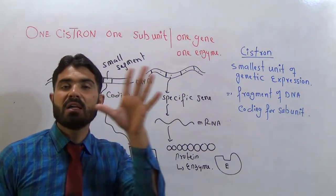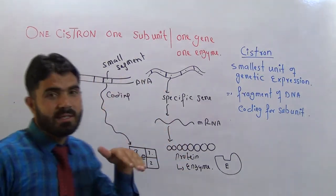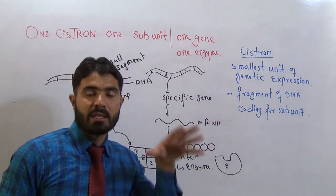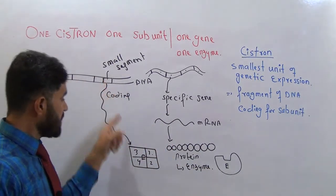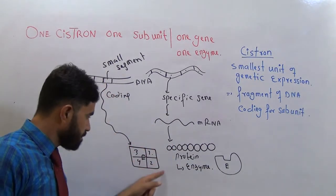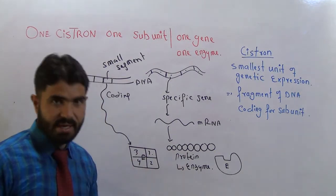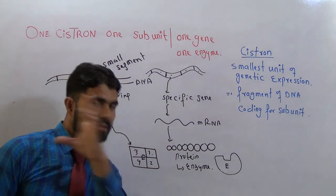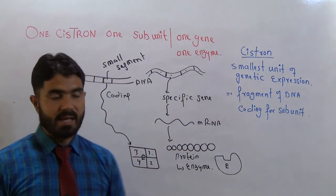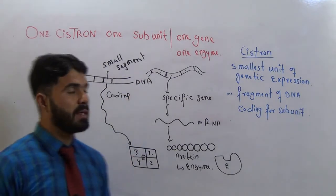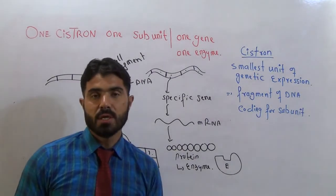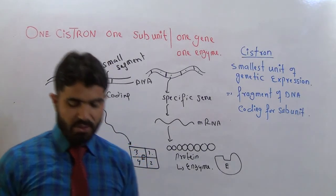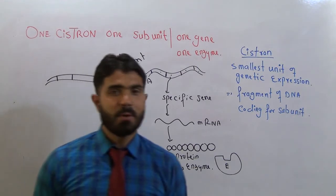A cistron looks like a gene, but the difference is that it does not code for the whole enzyme — it just codes for one part of the enzyme. This concept has replaced the 'one gene one enzyme' hypothesis. Thank you very much, see you in the next video, bye bye.